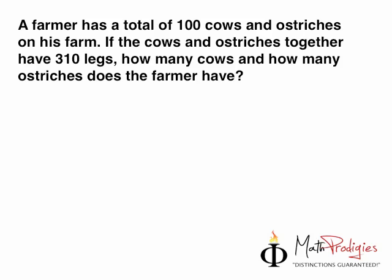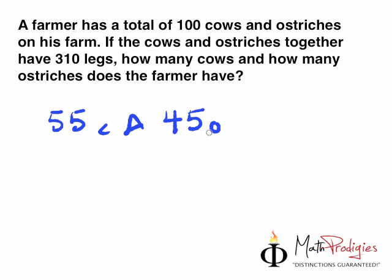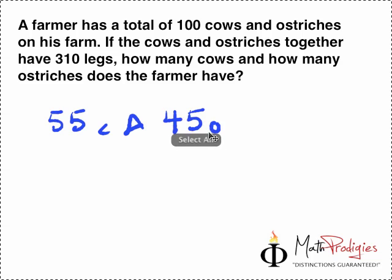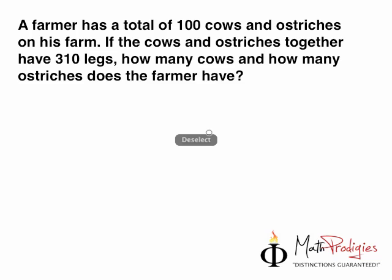If you remember, and for you if you're looking for the answer: the answer is 55 cows and 45 ostriches. If you got it right, high five — you are a math prodigy. Good job.